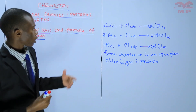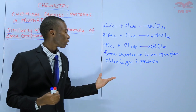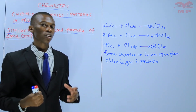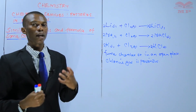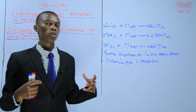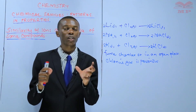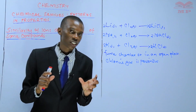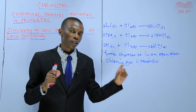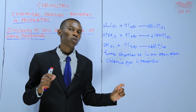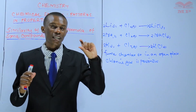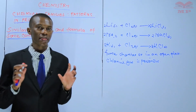We also mentioned that potassium is the most reactive, followed by sodium, and lithium is the least reactive. This is because the atomic size of potassium is too large, and therefore losing one electron from the outermost energy level is so easy because that one electron is loosely held by the nucleus.